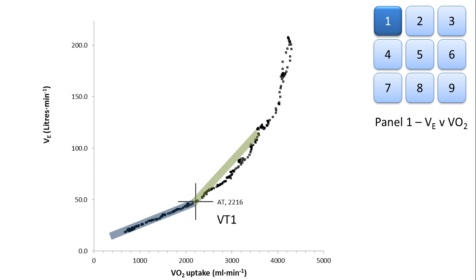This increases until respiratory compensation point, or VT2. At this point, metabolic acidosis can no longer be buffered and the pH starts to fall. This increase in acidity drives ventilation even further out of proportion to the oxygen uptake.